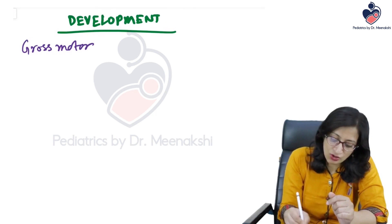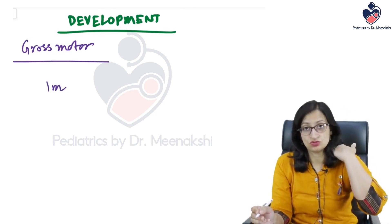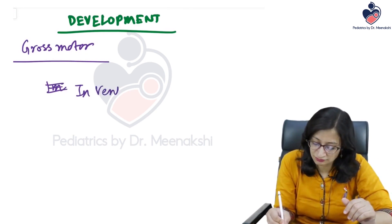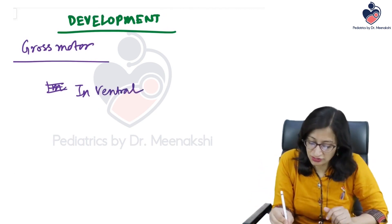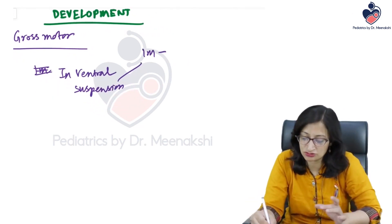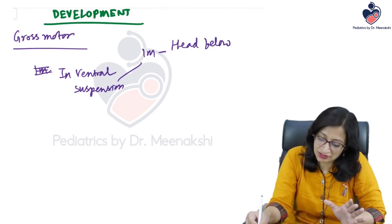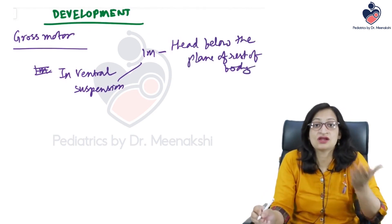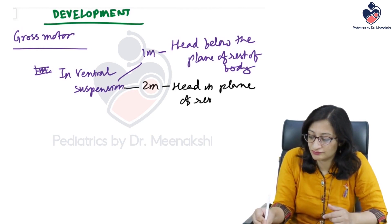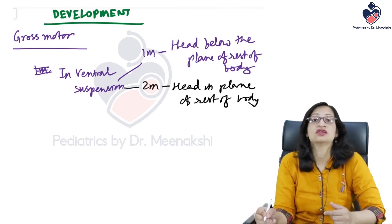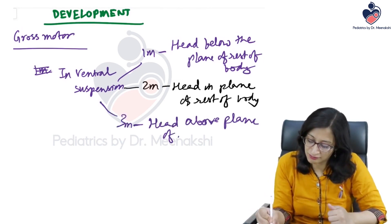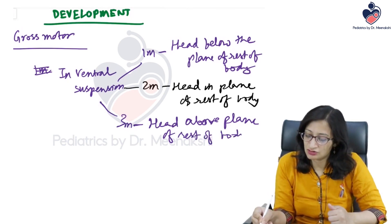Gross motor: at one month, the child has no neck control. In ventral suspension, the face is facing below. At one month, the head is below the plane of the rest of the body. At two months, the head comes in the plane of the rest of the body — partial neck control. At three months, the head can go above the plane of the rest of the body — full neck control develops.